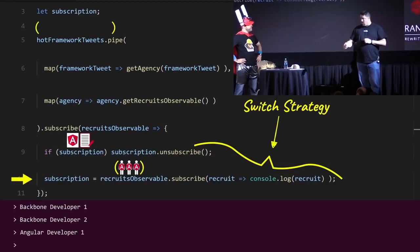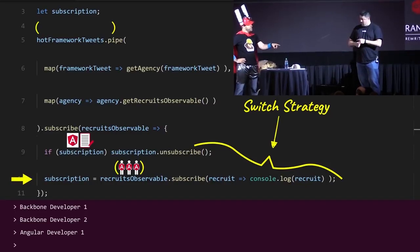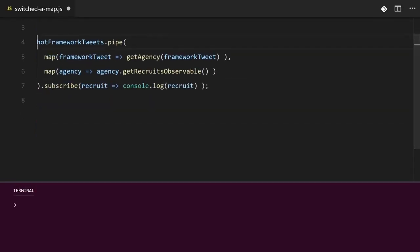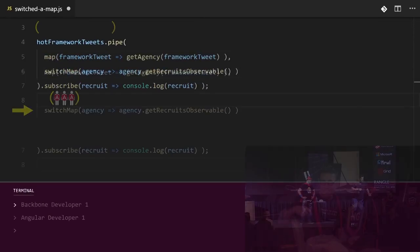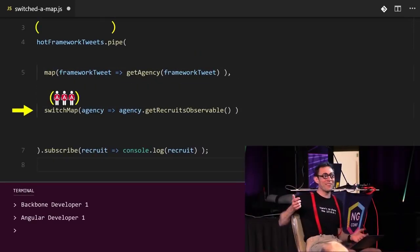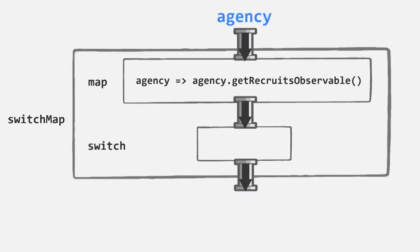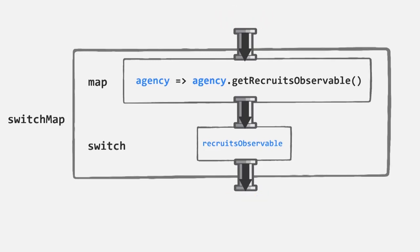Unsubscribing from the previous observable before subscribing to the new one is called the switch strategy. Exactly! And we can get rid of all of that scary code and just replace it with a single call to switchMap! It's not magic, dude. It's just code. The switchMap strategy maps agencies to individual recruits in a sequence, and if we look under the hood, it just does three things: it maps the agency to a recruits observable, it subscribes to this recruits observable — flattening the observable — and then it applies the switch strategy.